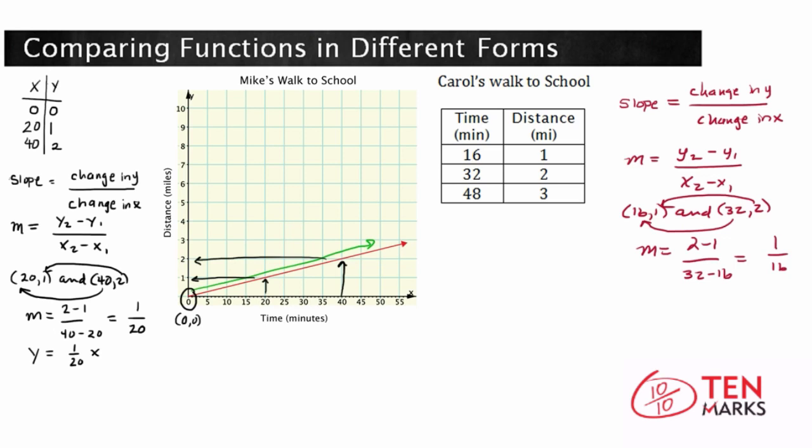And from here, we can write the equation that represents Carroll's walk to school. We would have y equals 1/16 x, and because her intercept is also 0, 0, we don't have a b to put out here. It would be plus 0, but there's no reason to write plus 0.